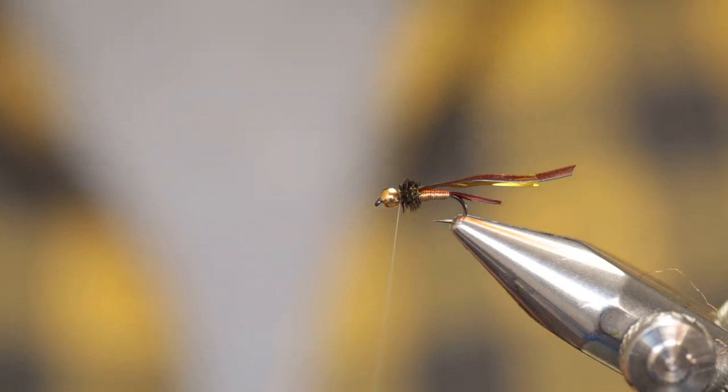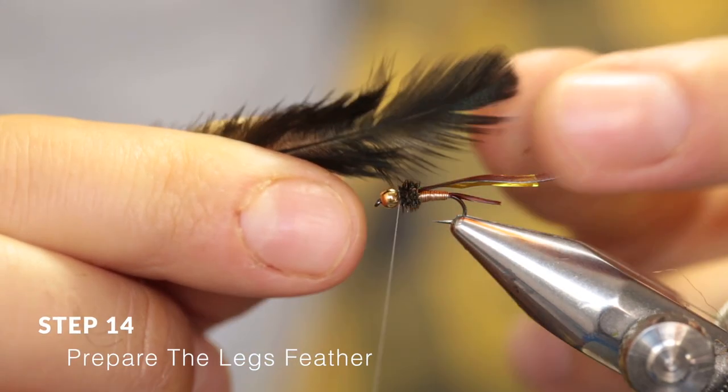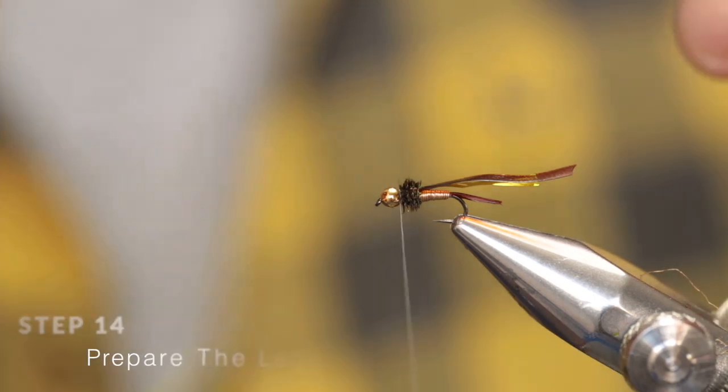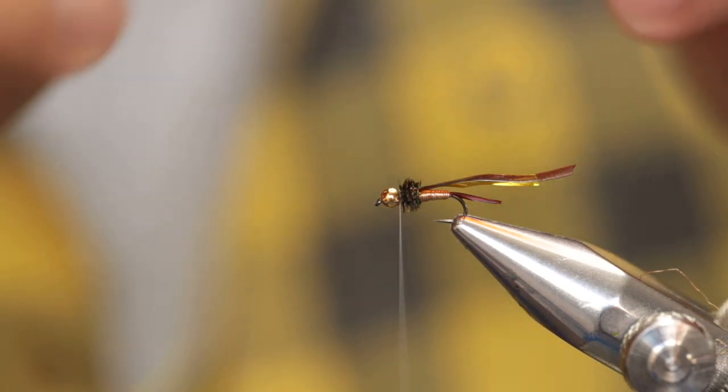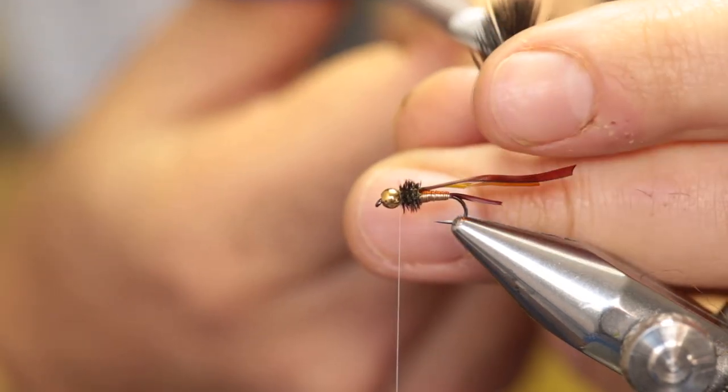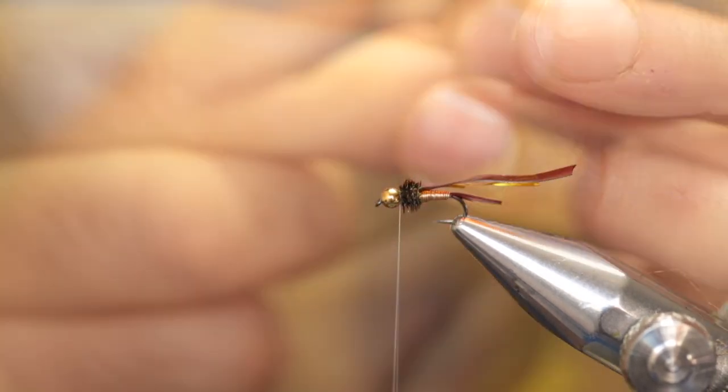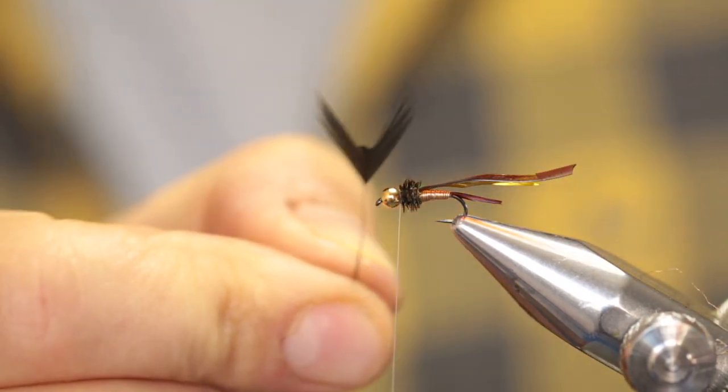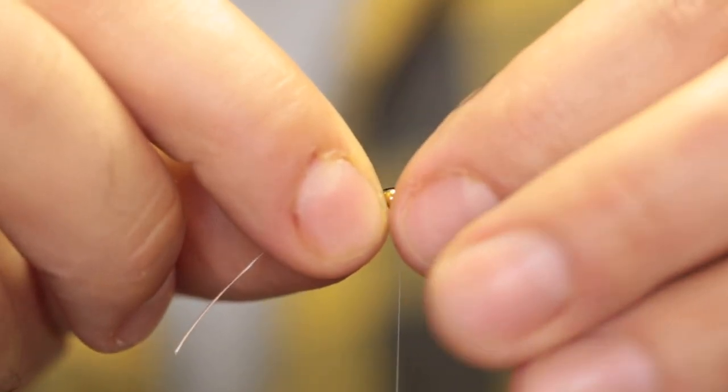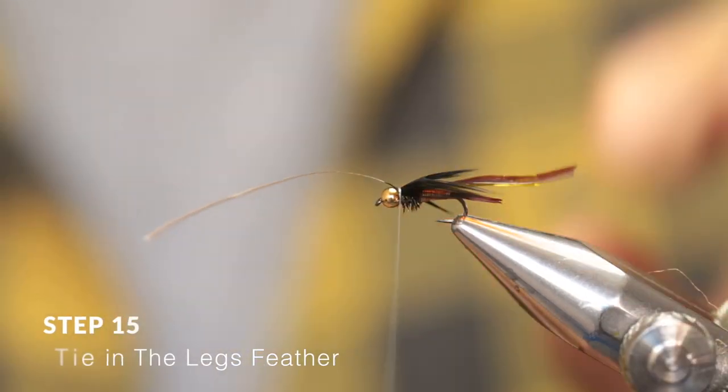Now it's time to select a feather for the legs or gills. Break one feather off the cape. This is the feather I selected. Remove all the fibers at the back of the feather by pulling them off. With your scissors, remove the tip to leave a V shape. You can make it slightly wider until you're left with that.